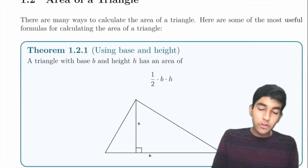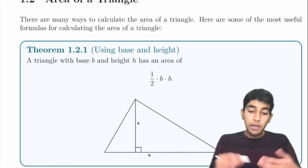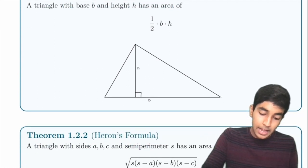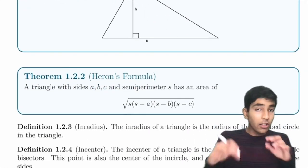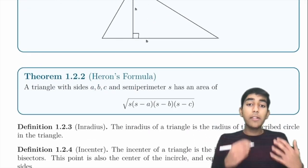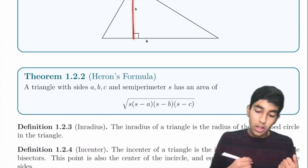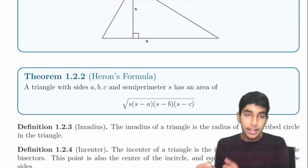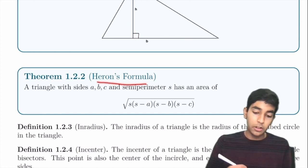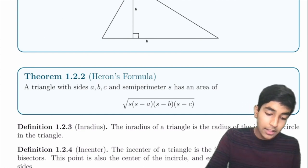Moving on to the area of a triangle. Most of you probably know the simplest way: half times base times height. But that's not the only way — you won't always have the height. Sometimes you'll only have the three sides, and in that case you'll have to use Heron's formula.